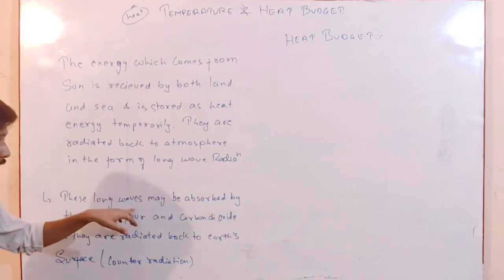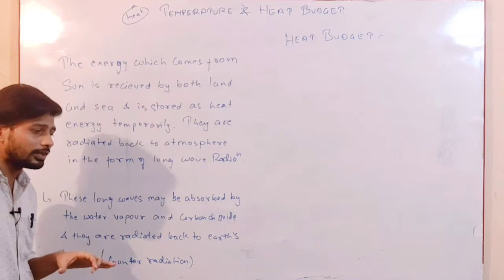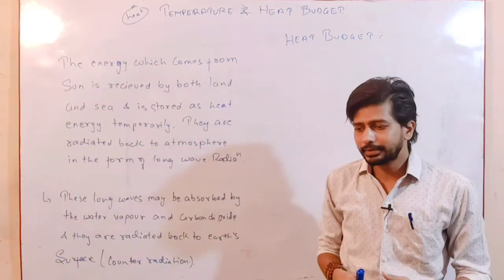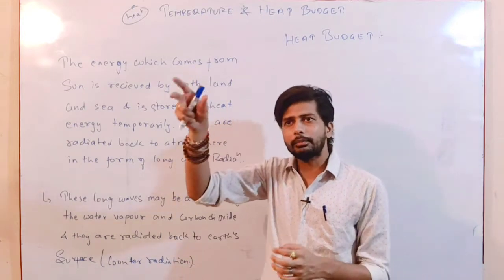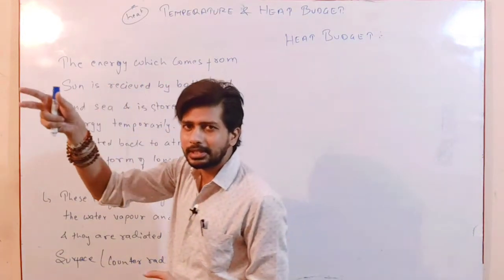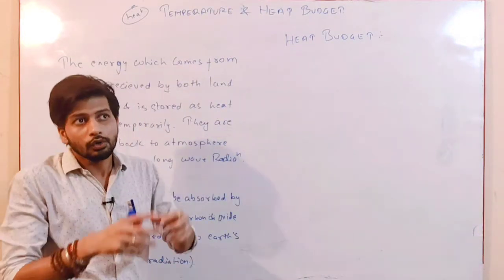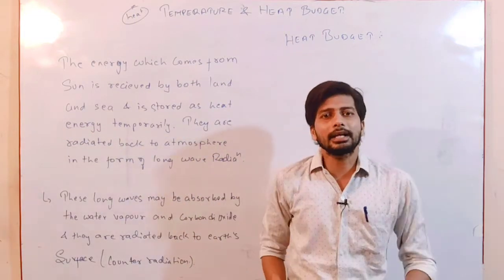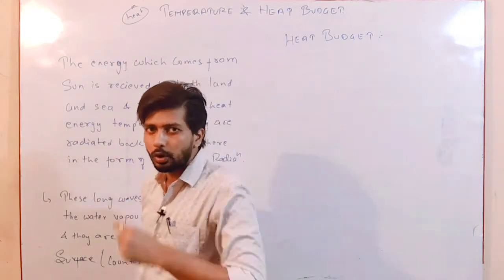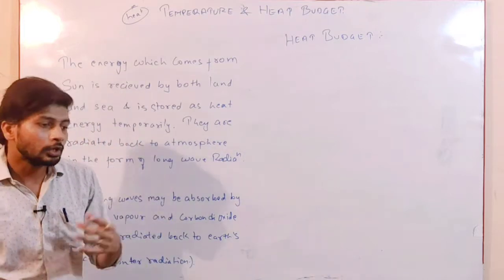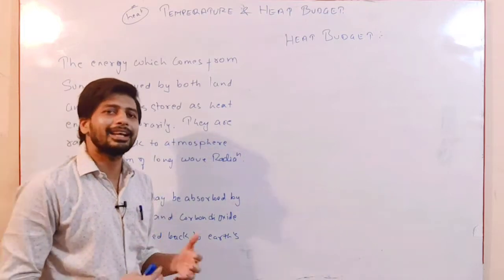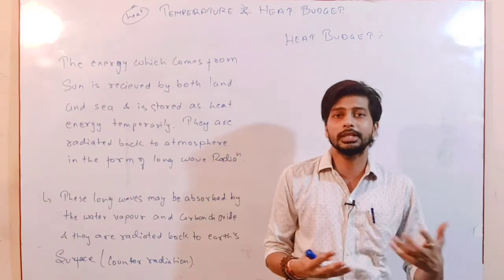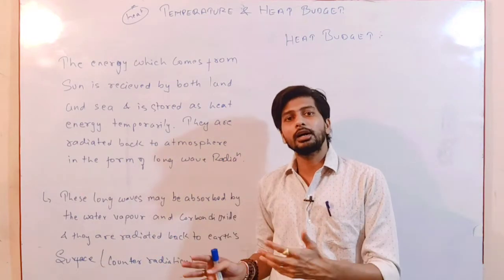These long wave radiations go upward where water vapor and carbon dioxide — greenhouse gases — are present. Those greenhouse gases absorb them and reflect them back onto the Earth's surface, continuously warming the Earth's atmosphere through long wave radiations. This is what we called the greenhouse effect.